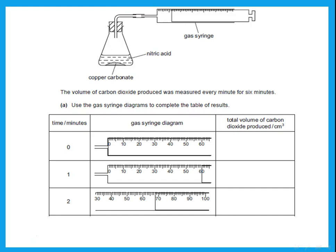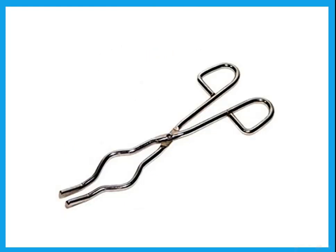A typical gas syringe question: 'The volume of carbon dioxide produced was measured every minute for six minutes — use the gas syringe diagrams to complete the table.' At time zero the gas syringe hasn't moved, so volume = 0. At one minute the reading is clearly 60. At two minutes it's 60-something — it is 68. You should be able to read volumes from a gas syringe.